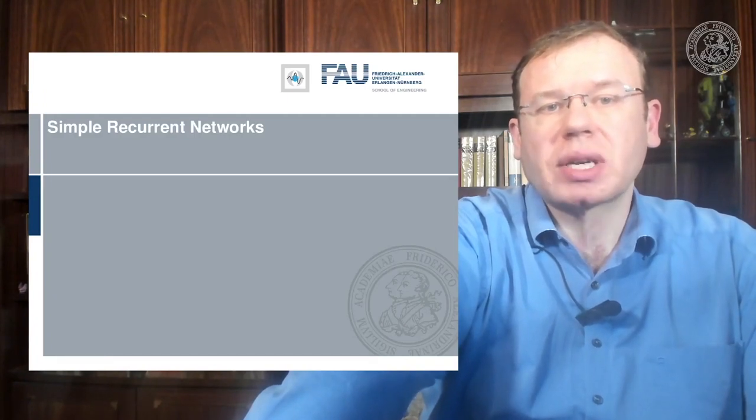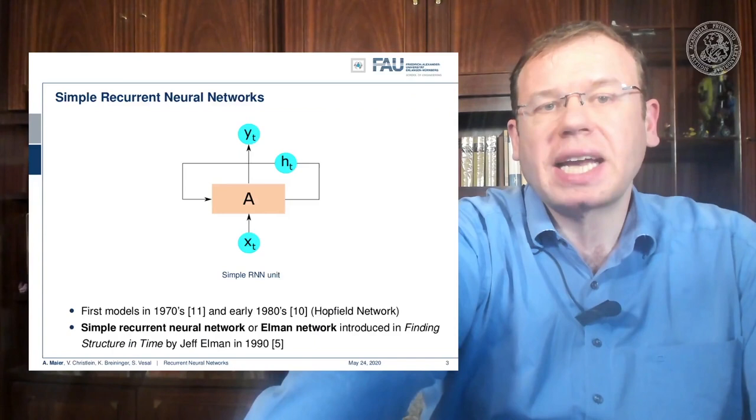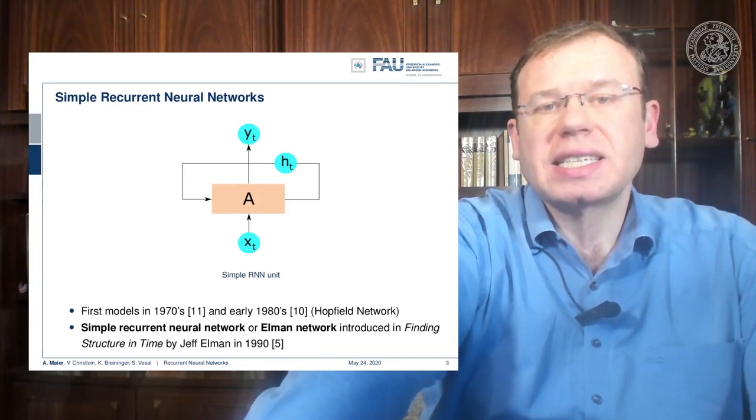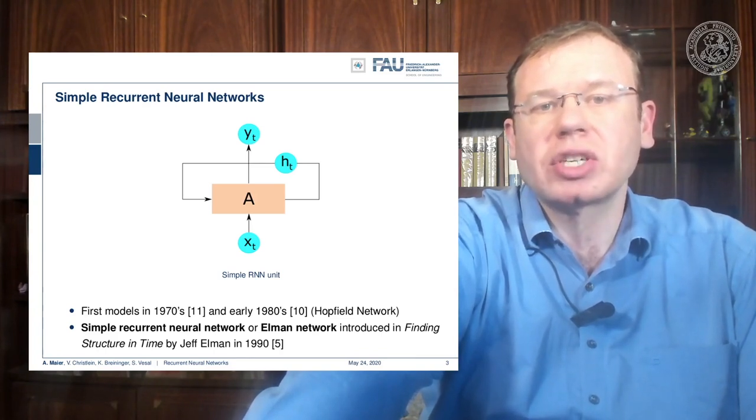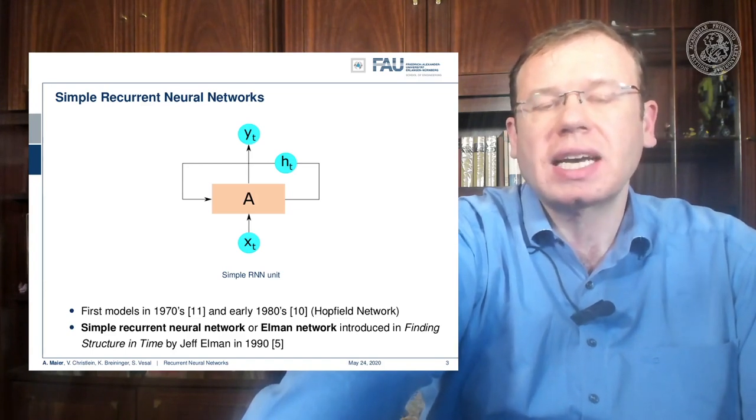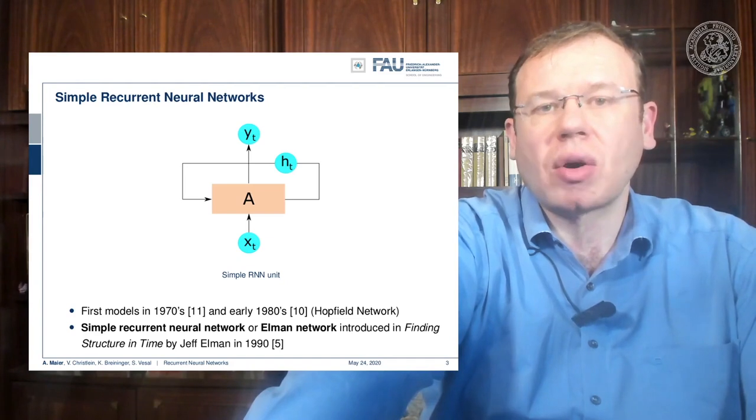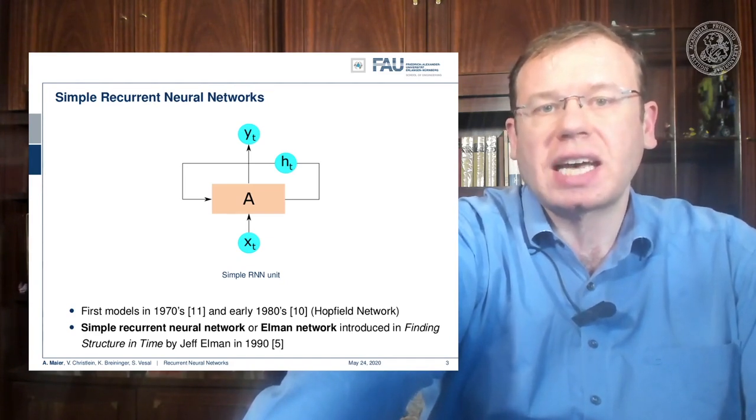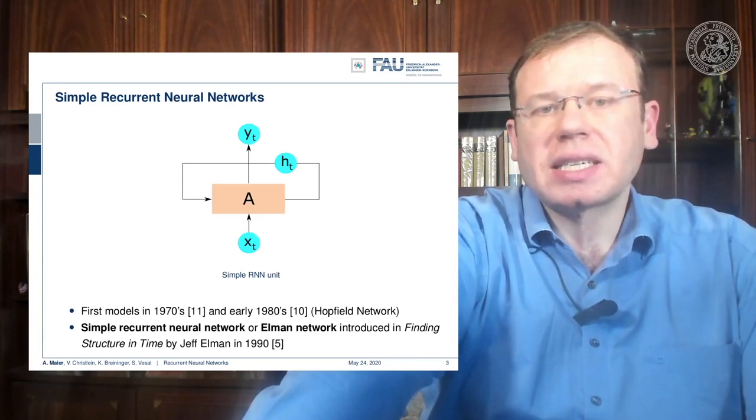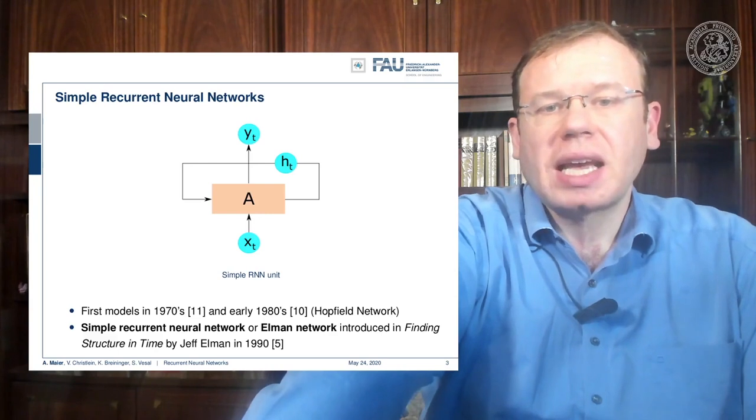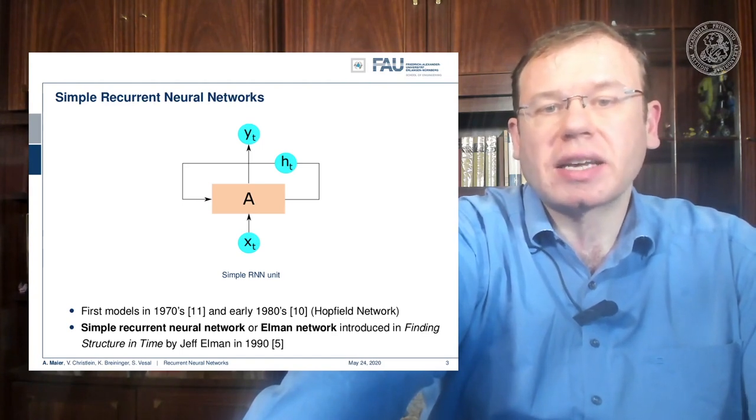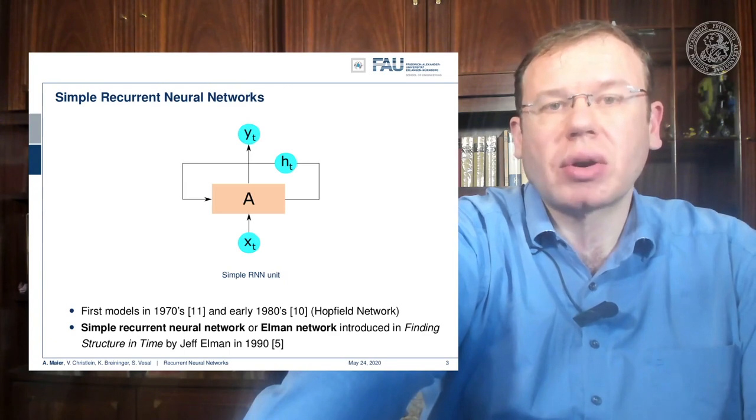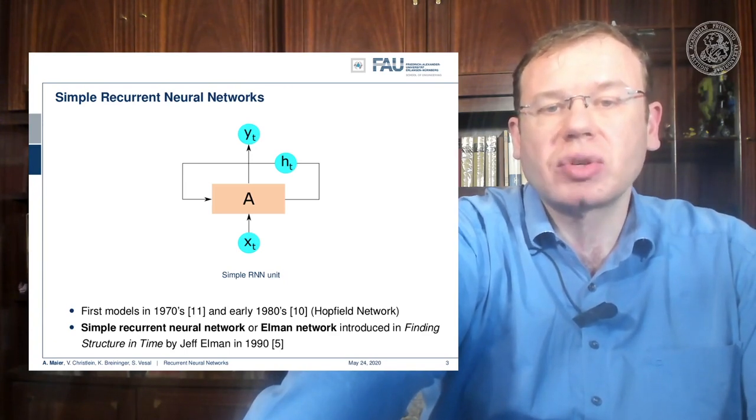So let's have a look at the simple recurrent neural networks. And the main idea is that you introduce a hidden state HT that is carried on over the time. So this can be changed, but it is essentially connecting back to the original cell A. So A is our recurrent cell, and it has this hidden state that is somehow allowing us to encode what the current temporal information has brought to us. Now we have some input XT, and this will then generate some output YT. And by the way, the first models were from the 1970s and the early 1980s like Hopfield networks.